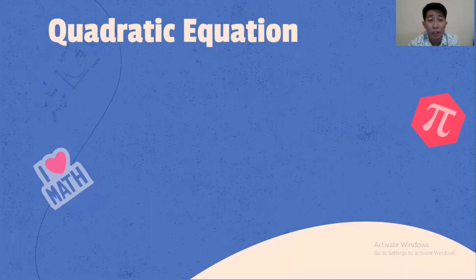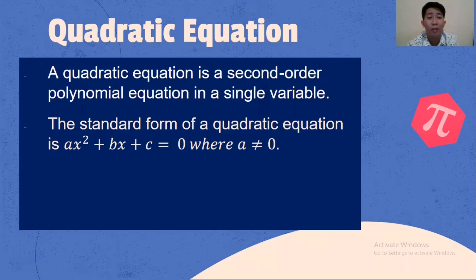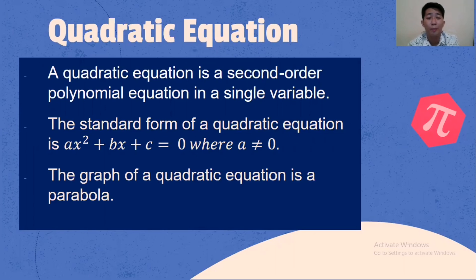What is a Quadratic Equation? A Quadratic Equation is a second order or second degree polynomial equation in a single variable. The standard form of a Quadratic Equation is AX squared plus BX plus C equals 0, where A should not be equal to 0. The graph of a Quadratic Equation is a parabola.